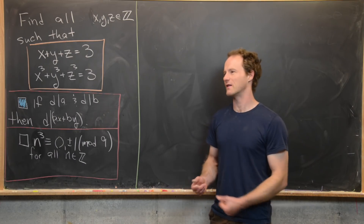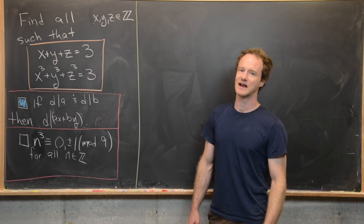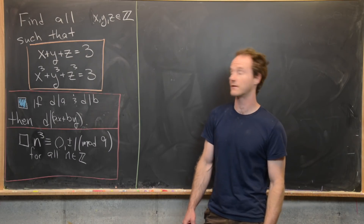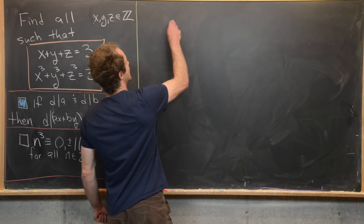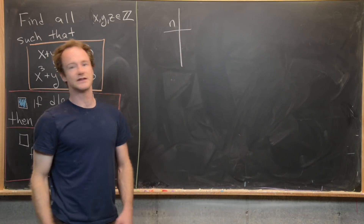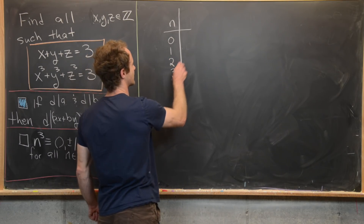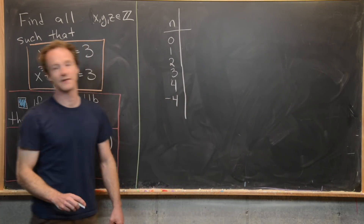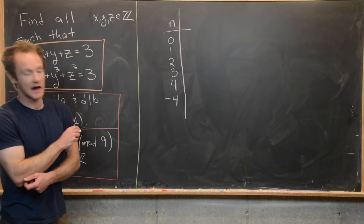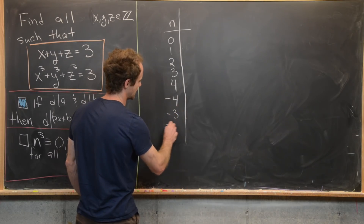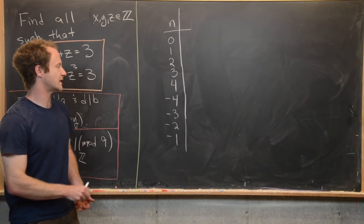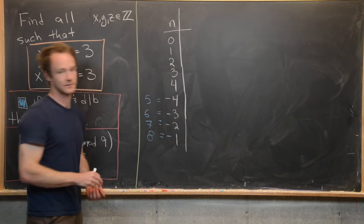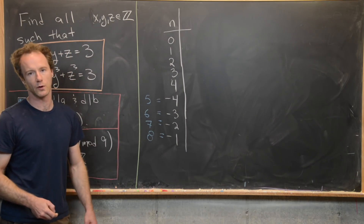We only need to take n values from zero to eight, since we can perform all calculations modulo nine. So we take values of n: zero, one, two, three, four — and instead of five through eight, we use negative four, negative three, negative two, negative one, since those are equivalent mod nine to five, six, seven, eight respectively.